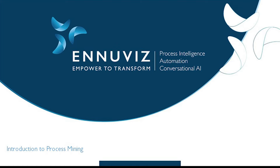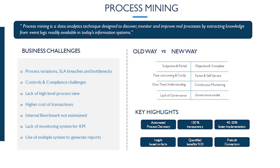The short answer is process mining combined with intelligence. Process mining is a technique designed to discover, monitor, and improve business processes. If one must improve the existing process, the first and foremost aspect is to have a clear understanding of how our current process is and how it is performing.